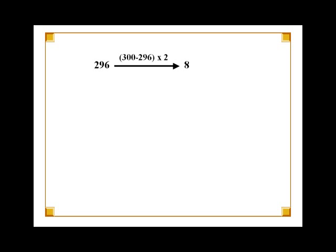The multiple of 100 closest to 296 is 300. So, subtracting 296 from 300 gives us 4 and multiplying 4 by 2 gives us 8. Now add 8 to 296. The result 304 is what we will use in our calculations to obtain the square of 296.